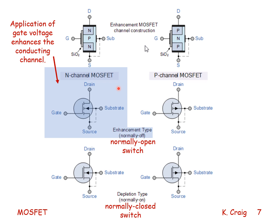The N-channel MOSFET is called an enhancement MOSFET — as is the P-channel — because the application of the gate voltage enhances the conducting channel for both. The enhancement type is a normally open switch. The depletion type is a normally closed switch. In the circuit representation, the enhancement MOSFET uses a dashed line for the drain-substrate-source connection, while the depletion type uses a solid line. The arrow direction indicates whether it is an N-type or P-type MOSFET.